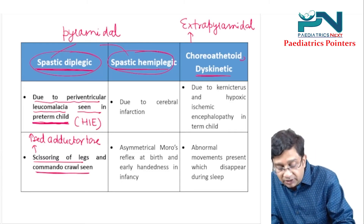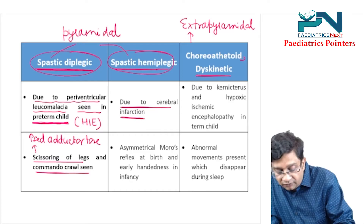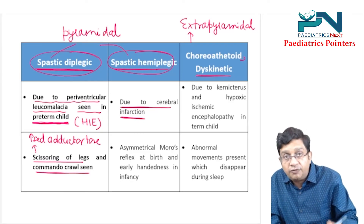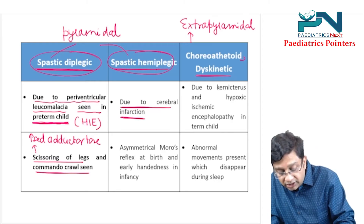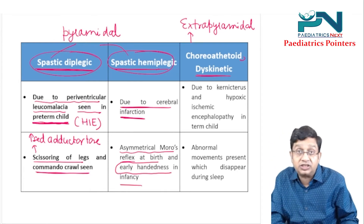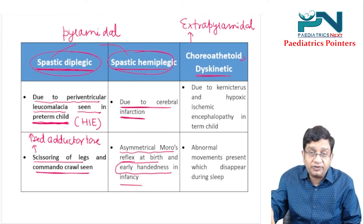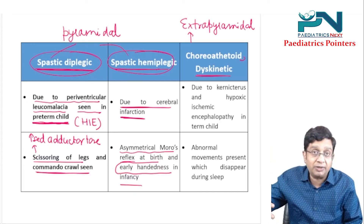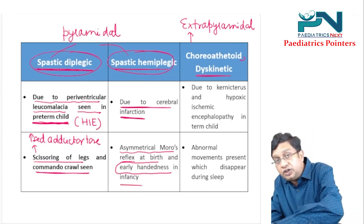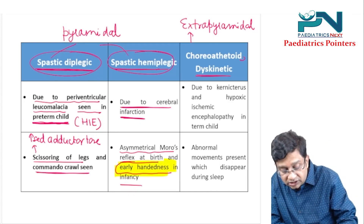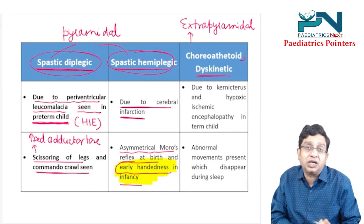Spastic hemiplegic type is due to cerebral infarction. Two important things to remember: at birth you can see an asymmetrical Moro reflex, and there is early handedness in infancy. If the right hand has hemiplegia, the child will use only the left hand — early handedness is a pointer toward spastic hemiplegic cerebral palsy.